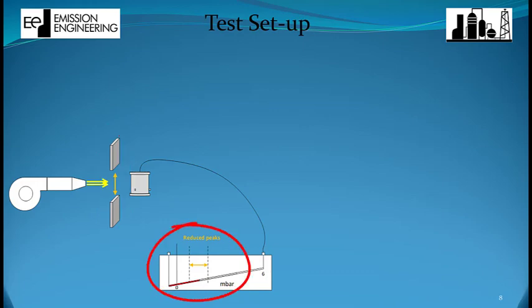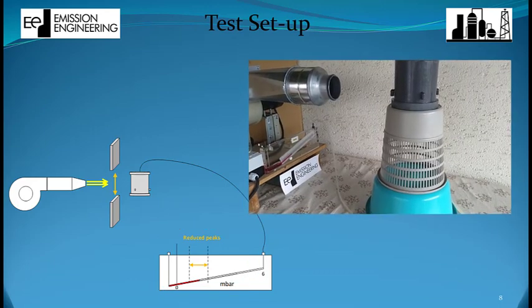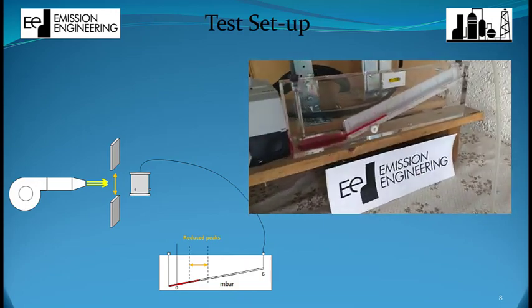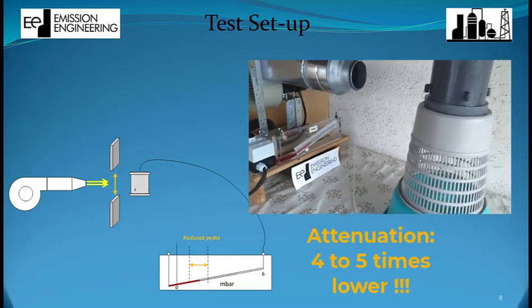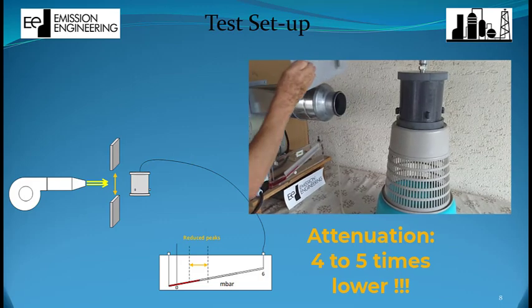there is an impact on the pressure differential manometer, but the peaks are way lower than when we used the piece of tubing as before. The attenuation effect is in the range of 4 to 5 times lower. So the likelihood of unexpected and undecided alarms and interlocks is much lower.